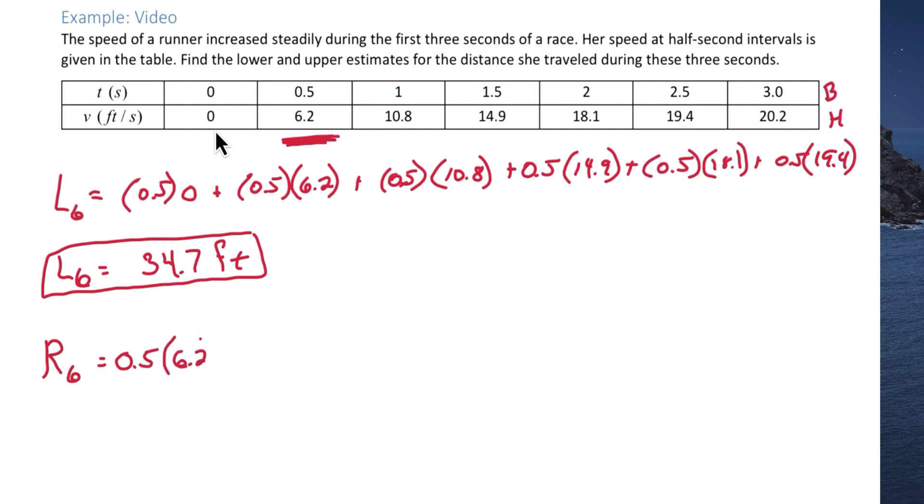The height of the first rectangle is 6.2, plus 0.5 times 10.8, plus 0.5 times 14.9, plus 0.5 times 18.1, plus 0.5 times 19.4. And this time we do go to the far-right since we're dealing with right-hand endpoints.